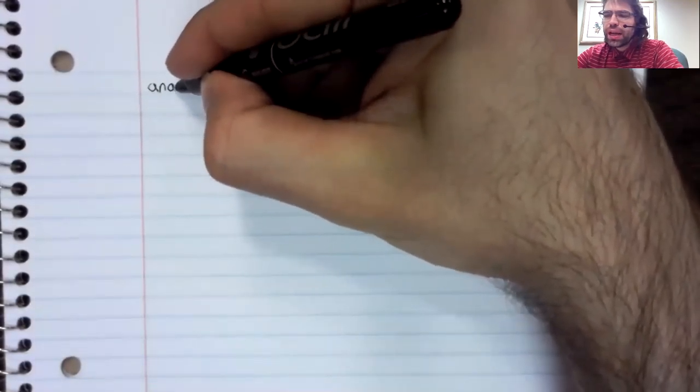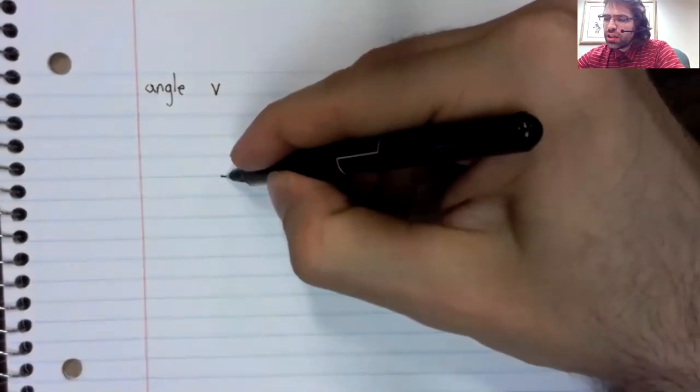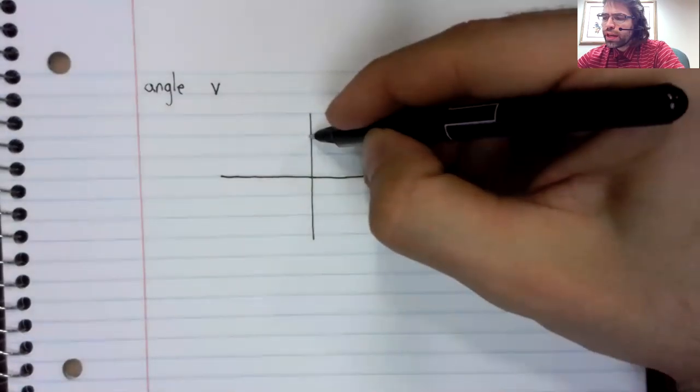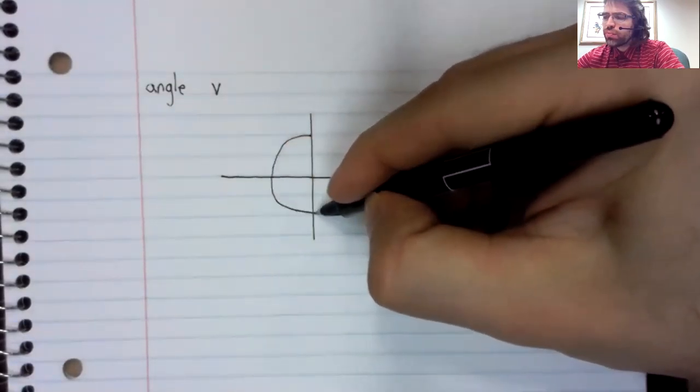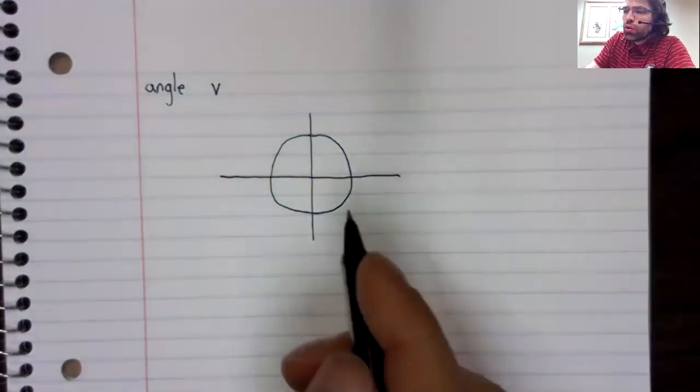Let's define the sine and the cosine. Let's say that you have some angle V, we'll call it. We've seen that an angle can be used to define a point on the unit circle.